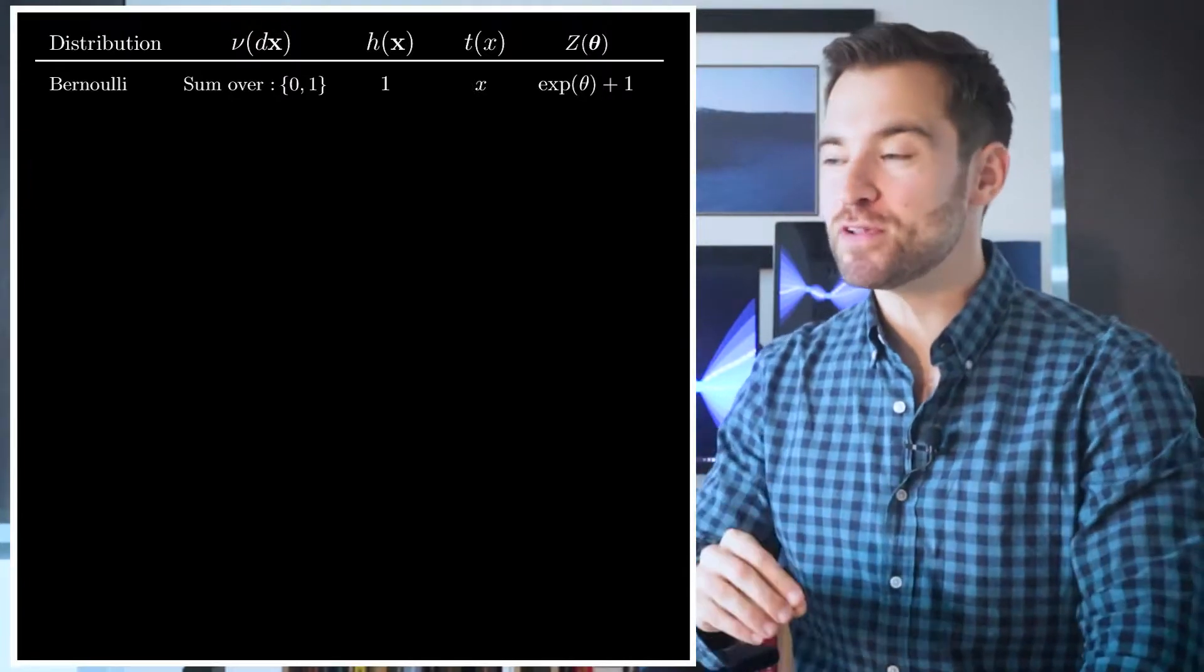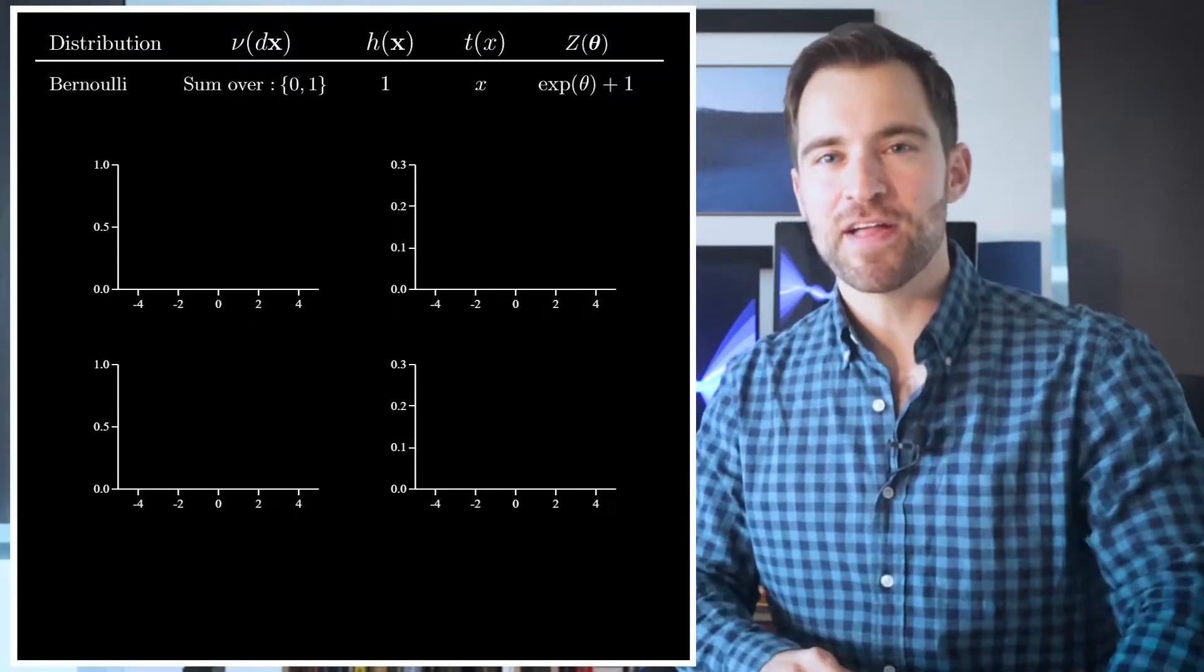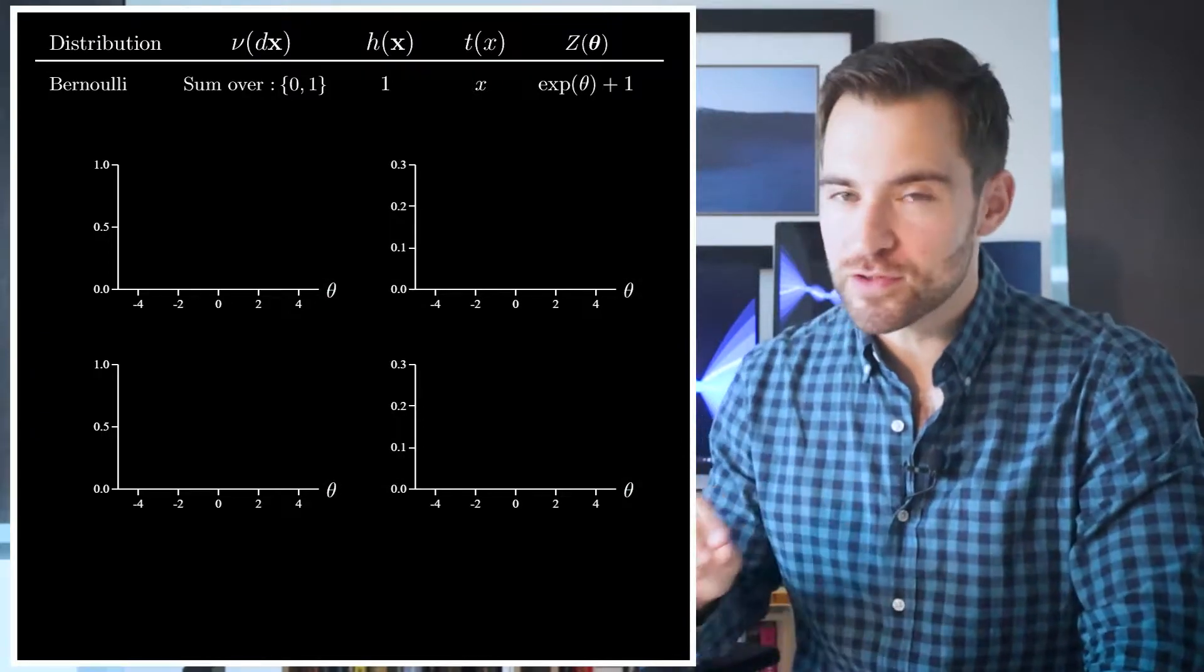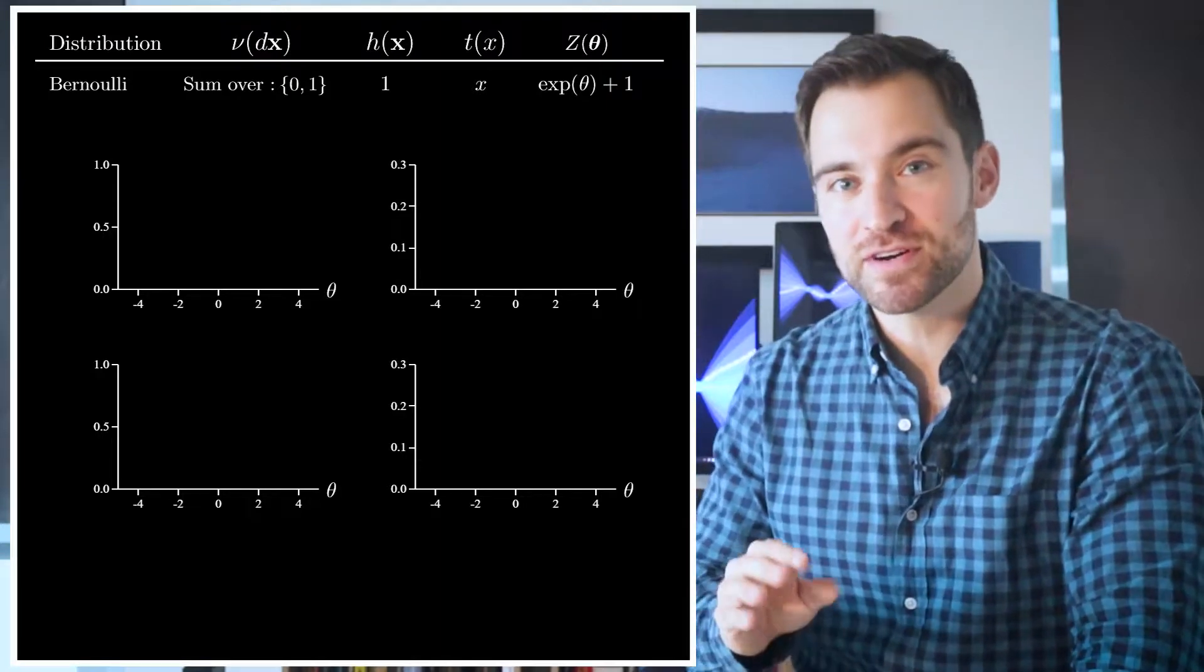Z(θ) turns out to be e raised to θ plus 1. And now, I'm going to plot four functions, which will make this property clear. For all of them, the value of θ will vary along the horizontal axis. In the case of the Bernoulli, θ is just a single number, so we can do this.